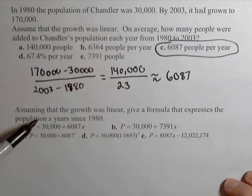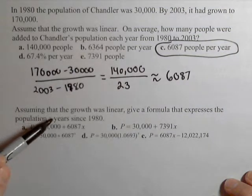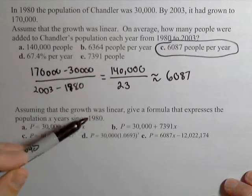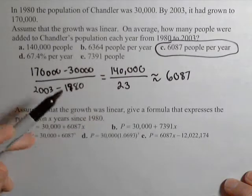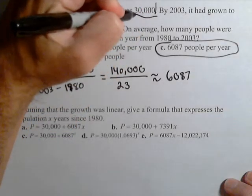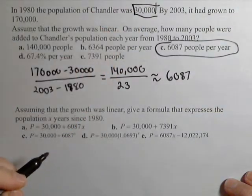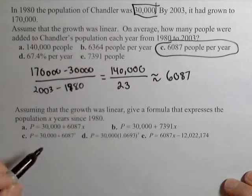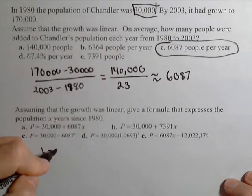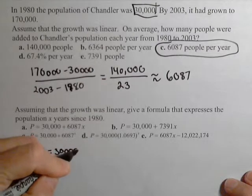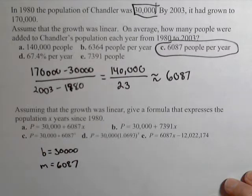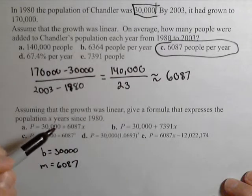Now, again, assuming the growth is linear, find a formula that expresses the population with x being in years since 1980. So that means x equals zero is 1980. That automatically makes 30,000 our initial amount or our y-intercept. So we know that 30,000 will be our b for our linear function, and we know our slope, we found it last time, is 6,087, and we know it's increasing, so it needs to be plus.